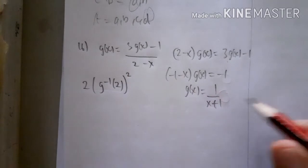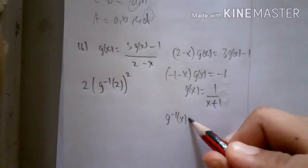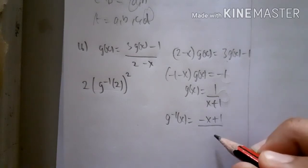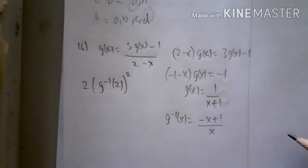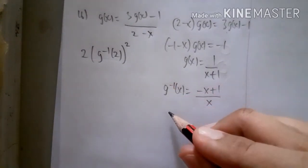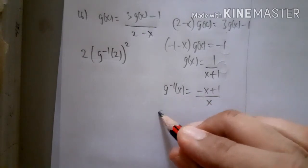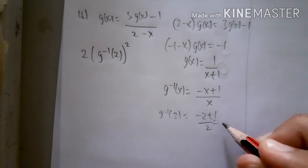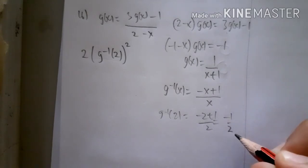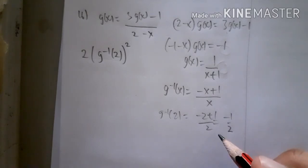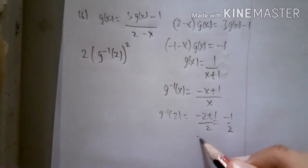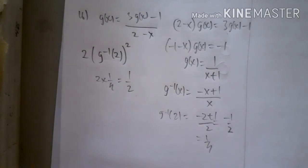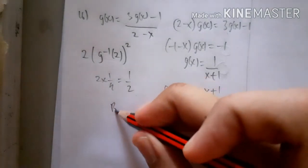Since they ask about the inverse, we invert g(x) = 1/(x+1) to get g⁻¹(x) = (-x + 1)/x. Substituting x = 2 gives g⁻¹(2) = -1/2. Squaring it gives 1/4, and 2 × (1/4) = 1/2, so the answer is option B.